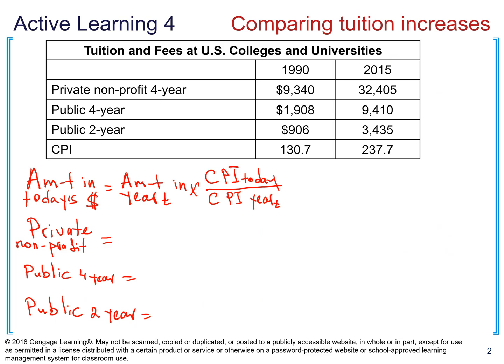On this graph I already wrote down the formula. Remember: amount in today's dollars equals the amount in year t, multiplied by the ratio CPI today over CPI in year t. The amount in year t is some past amount given to us, and we have two CPIs — CPI in year t and CPI today.